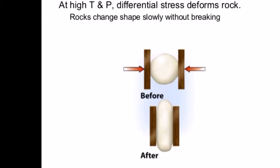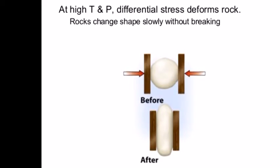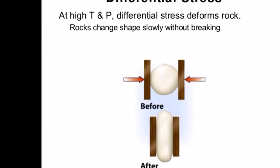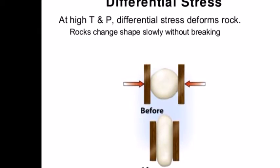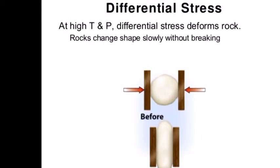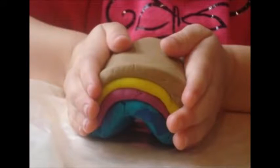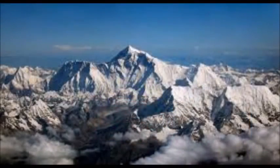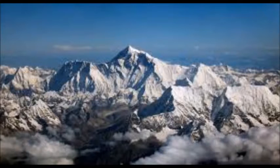How do rocks bend? There are four major factors that determine bending or breaking: the type of force applied — stress — pressure, temperature, and the rock's mineral composition. Any change in size, shape, or position of a rock body is a response to stress. Stress is an unequal directional force applied. Deformation has three important types: elastic, ductile or plastic, and brittle or fractured.